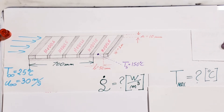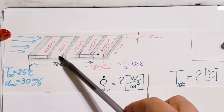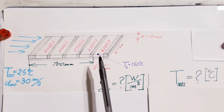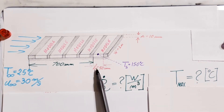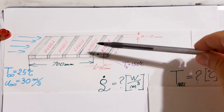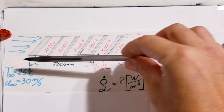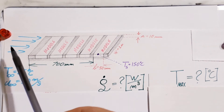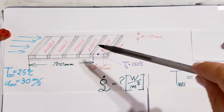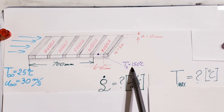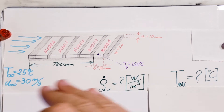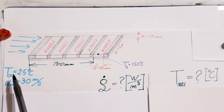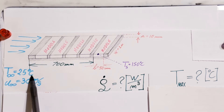We are dealing with a heat transfer problem. We have a flat plate that contains several modules. It has a width of 1 meter, each module has a length of 50 millimeters, and the plate with the modules has a thickness of 10 millimeters. The top surface of this plate with the modules is maintained at 150 degrees Celsius — a uniform surface temperature. We also know that air is blowing over it at 25 degrees Celsius.